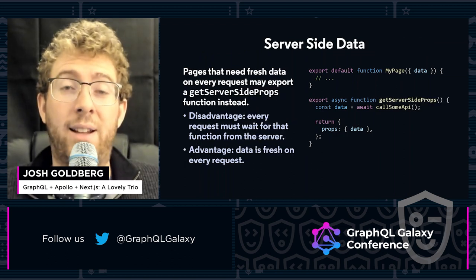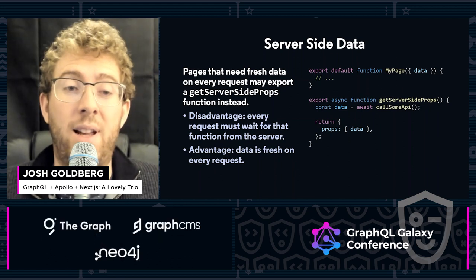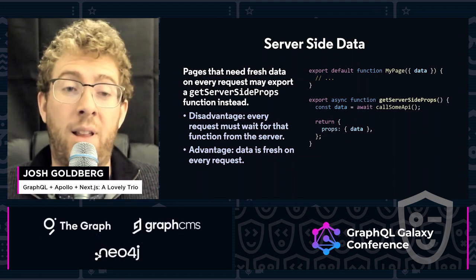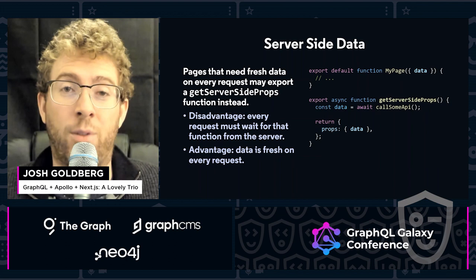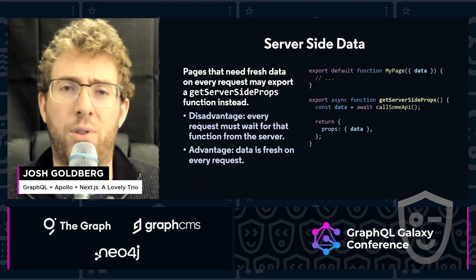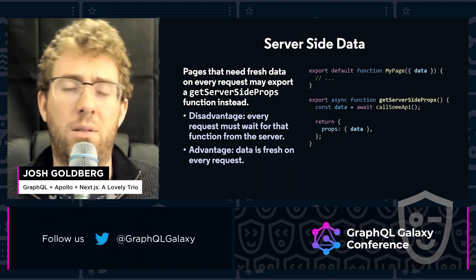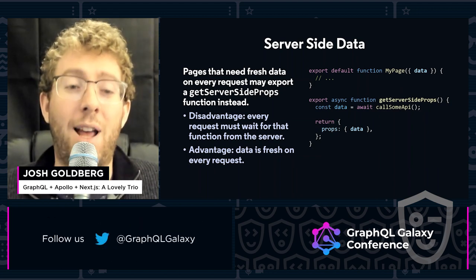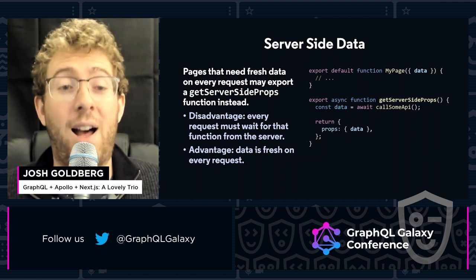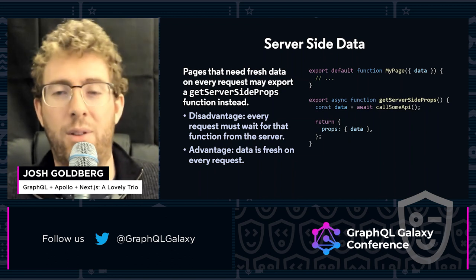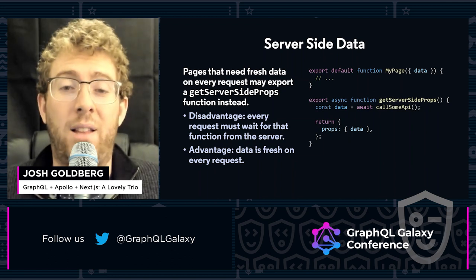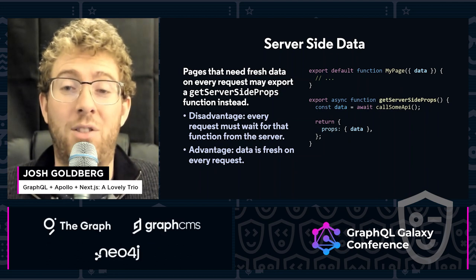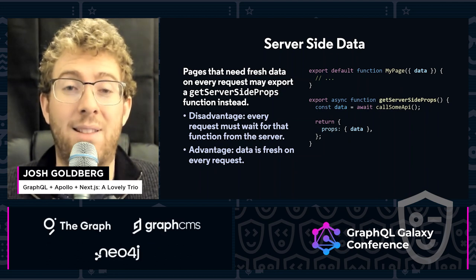Some pages do need server-side data, meaning data that comes in for every request. There is a disadvantage here in that if you do need to fetch data on every request — if it's, say, a learner dashboard for a learning tool or a timeline for a social media app — then your page does have to work for that request every time it's called, but you do get fresh data on every request, so there are pros and cons. It looks visually very similar. You just call it getServerSideProps instead of getStaticProps.